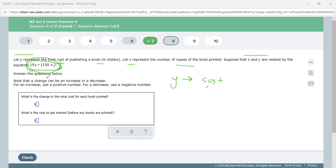Note that the change can be an increase or decrease. Slope can be negative or positive. For an increase, use a positive number; for a decrease, use a negative number.